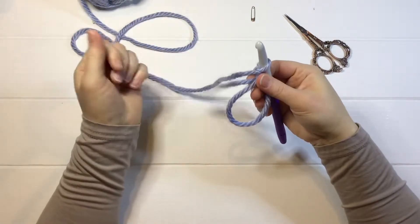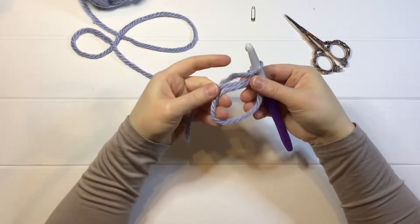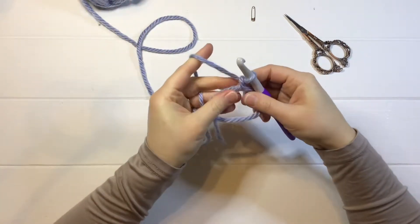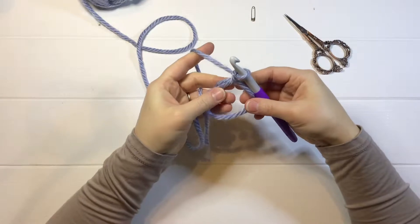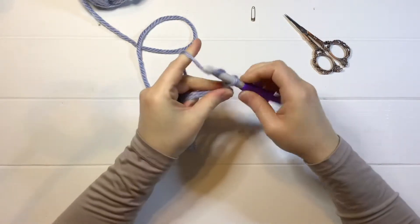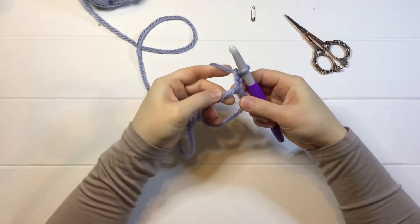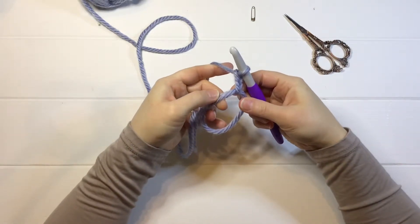Then I just make sure my tail is all nice and neat and not inside the circle. And then from here, follow your pattern. If you were doing single crochets, you would normally chain one, and then you would single crochet into the circle here.